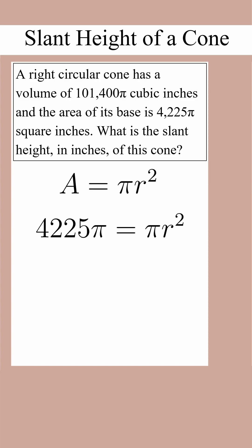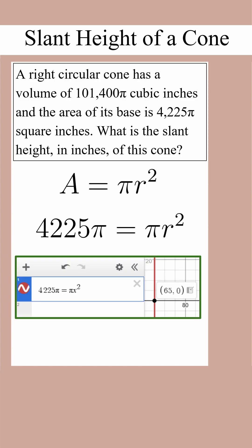We get 4225 pi equals pi r squared. You can divide both sides by pi and then take the square root by hand, or you could solve this equation on Desmos. We see that the radius is 65.